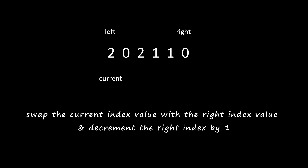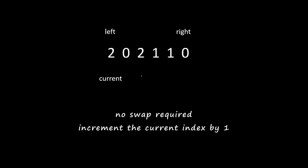After swapping with the right pointer, we decrement the right pointer by one. When we encounter a 1, we don't do any swapping — we simply increment the current pointer by one.